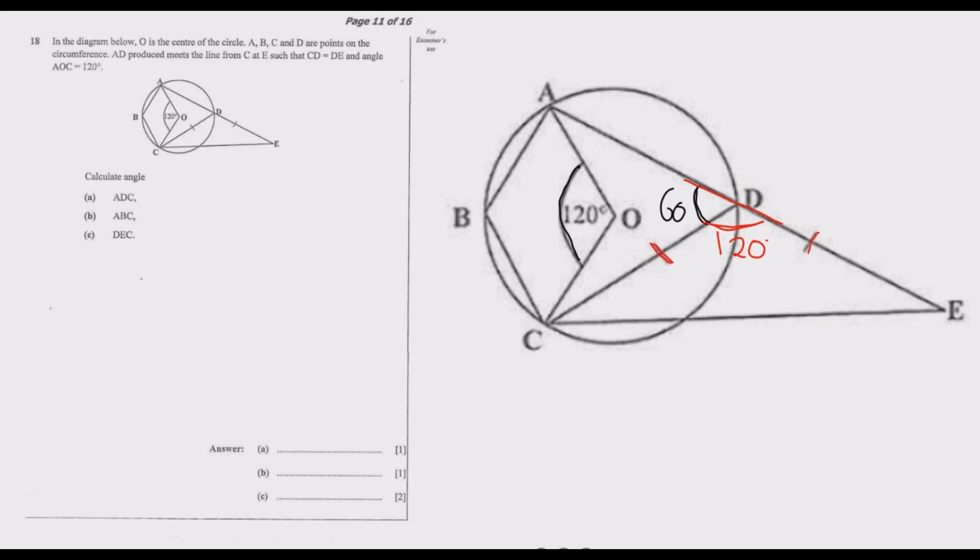Then because these two sides are equal in triangle CDE, what it means is this triangle is an isosceles triangle and two angles are equal. In this case, it's this angle and this angle.